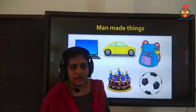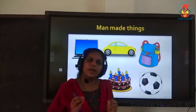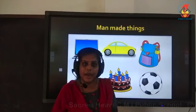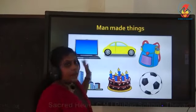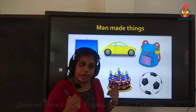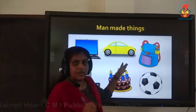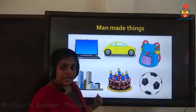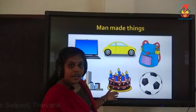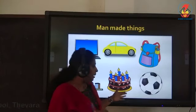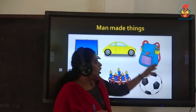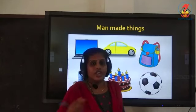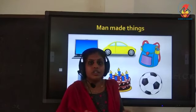The next group is man-made things. In the name itself it shows what a man-made thing is — things which are made by man. Most non-living things are man-made. For example, a laptop is made by man, a car is made by man, a bag is made by man, a building is built by man, a cake is made by man, and a ball is made by man. You may know more — you can share with your parents which things are man-made.